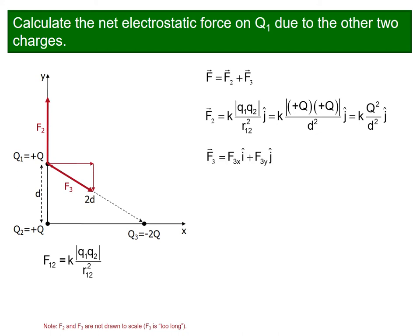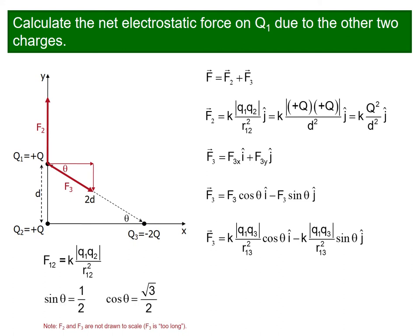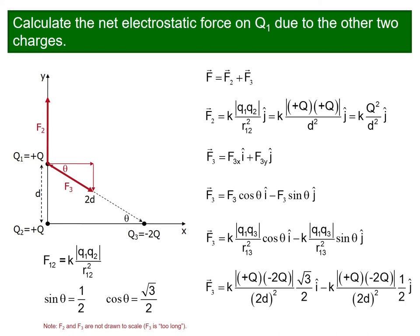F3 has components in both axes: F3 equals F3X i hat plus F3Y j hat, meaning x-axis and y-axis components are both available. F3X is F3 cos theta and the y-axis component is F3 sin theta. We put the F3 value here, and cos theta has a value of root 3 over 2, and sin theta is 1 over 2, giving us this expression.